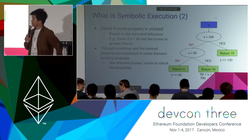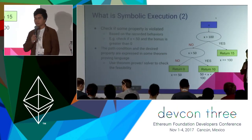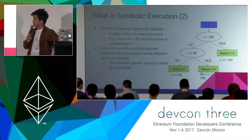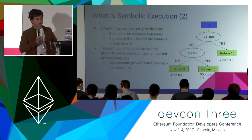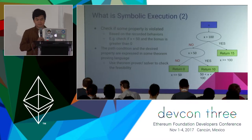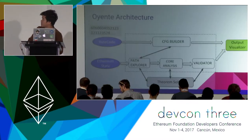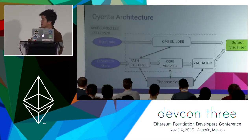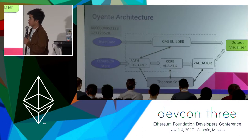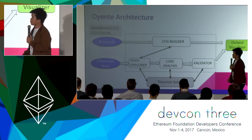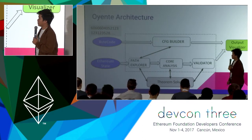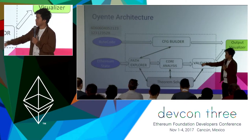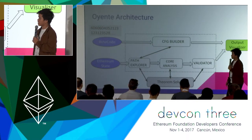We can use the theorem prover or solver to check the feasibility of property violation. This is the main architecture of Oriente. Oriente works with the EVM bytecode and also takes the Ethereum state into account. Given the bytecode, it will generate the control flow graph of the contract and use symbolic execution to explore all the possible paths.